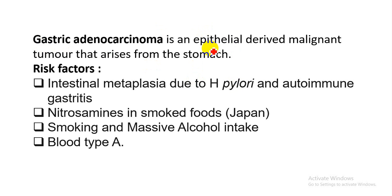Gastric adenocarcinoma is an epithelial tumor derived from the epithelium of the stomach. The most common site is the lesser curvature of the stomach.